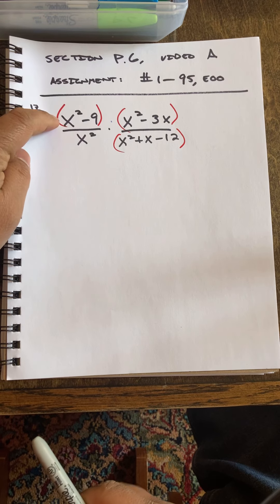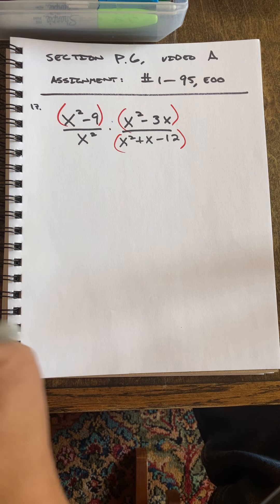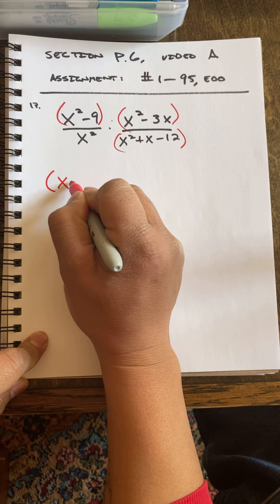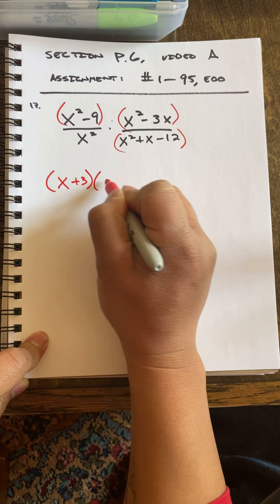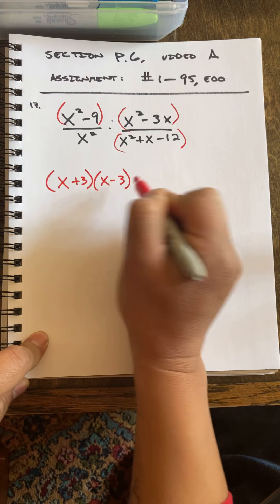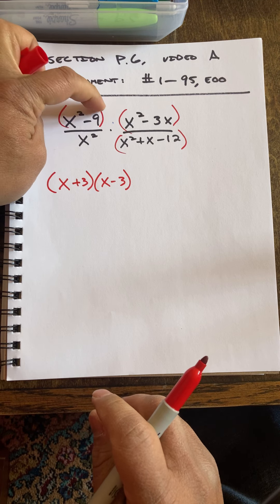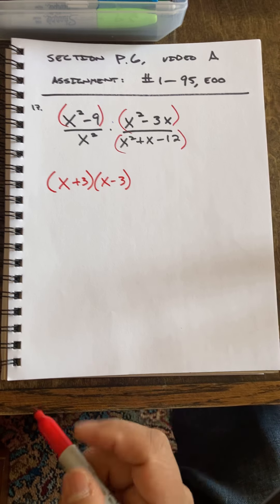So I'm going to deal with this red part here first. That can factor into X plus three times X minus three. And I know that because I have a difference of squares here. Perfect square minus perfect square always breaks out like this.